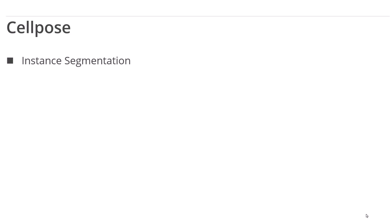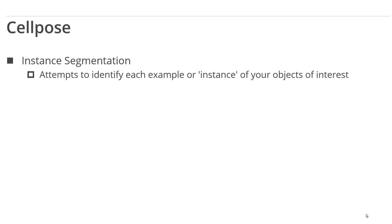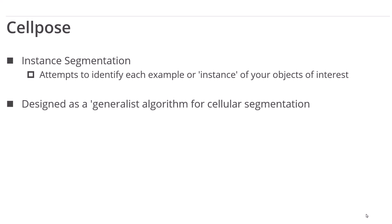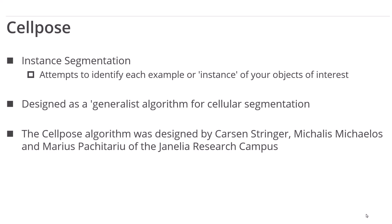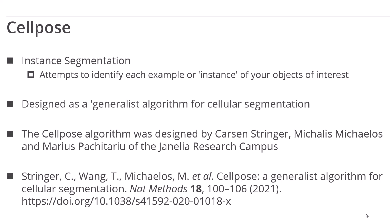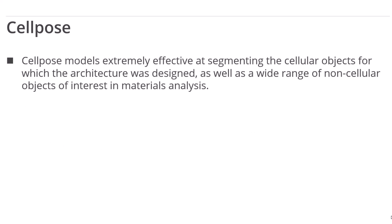CellPose performs instance segmentation, which means that it attempts to identify each example or instance of your objects of interest. It was designed as a generalist algorithm for cellular segmentation by Carson Stringer and colleagues at the Janelia Research Campus. CellPose models are extremely effective at segmenting cellular objects for which the architecture was designed, as well as a wide range of non-cellular objects of interest in materials analysis.